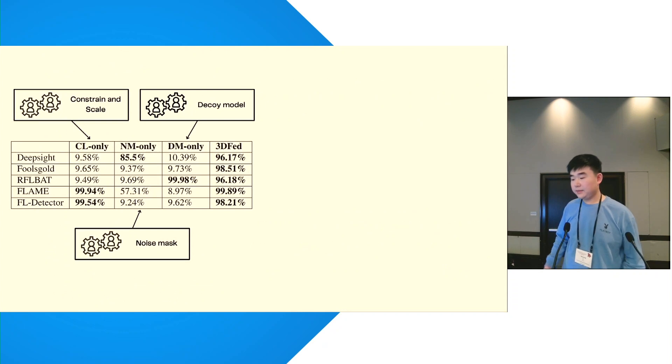There's a table I want to highlight. Recall that 3DFAT is a multilayered structure which combines multiple modules together. Here we want to see what happens if only one of them is applied against the same set of defenses.